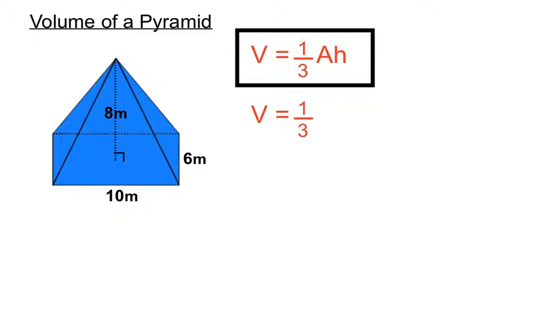So we have volume equals one third times the area of the base. Now I think the area of the base will be rectangular, yes, 6 times 10 will get us the area of the base times the perpendicular height, which is 8 there.